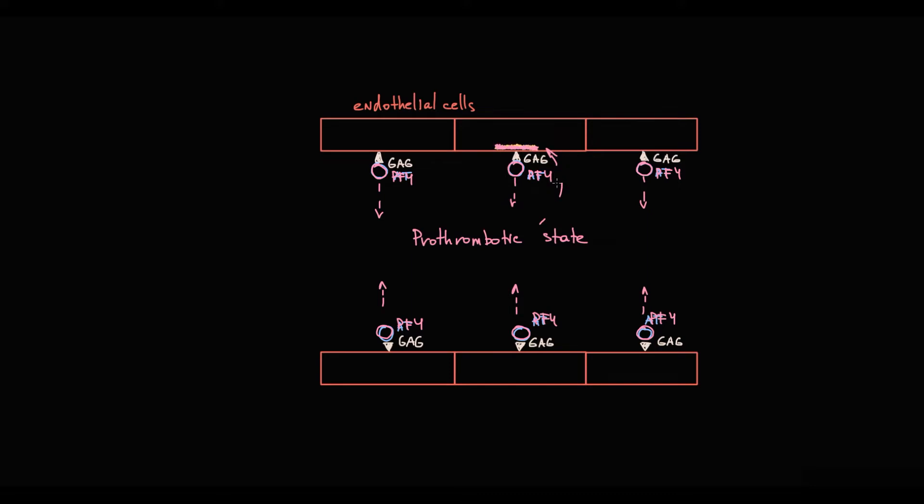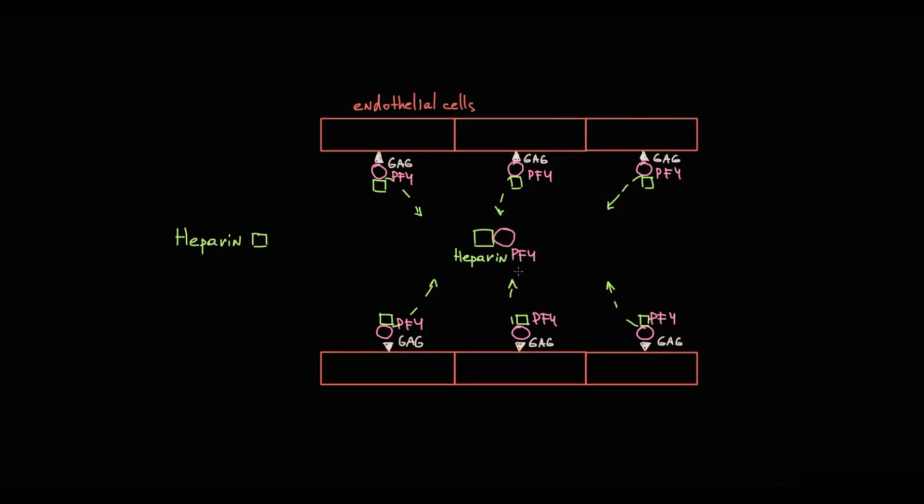With heparin infusion, once negatively charged heparin appears in the blood, it binds to positively charged platelet factor IV. Because heparin has high affinity for platelet factor IV compared to other glycosaminoglycans, heparin takes away platelet factor IV from endothelial cells with formation of heparin-platelet factor IV complex in circulation. Very important to know that once heparin binds to platelet factor IV, it induces conformational changes in platelet factor IV. This results in creation of a totally new protein for the immune system, a so-called new antigen. Because everything new is recognized by the immune system as foreign substance, this complex is highly immunogenic.